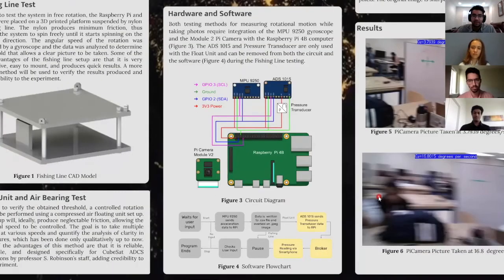And so now Christine is going to talk about the hardware and software involved with this testing. Both of the methods mentioned above require the use of the MPU-9250, which is the rectangle you see here, which is a gyroscope that we're using to record rotational data. It also uses the Pi Camera V2 module, which is a smartphone-sized camera that we're using to take pictures, and we're using the Raspberry Pi 4B. The ADS-TED15, which is an analog to digital converter, is only used to measure the air pressure of the float unit. Therefore, it can be removed during the fishing line test.